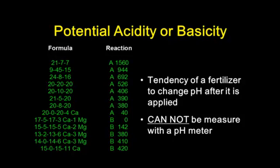What that means is if you put on one ton of 21-7-7, it will require 1560 pounds of calcium carbonate to neutralize the acidity produced. Look at the 15-0-15-11 calcium — that has a potential basicity of 420 pounds per ton. If you put on one ton of 15-0-15 onto a soil, it will create enough basicity to equal 420 pounds of calcium carbonate.